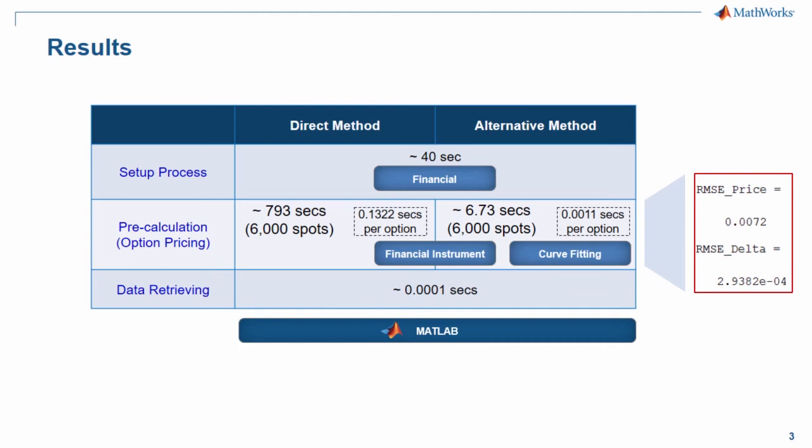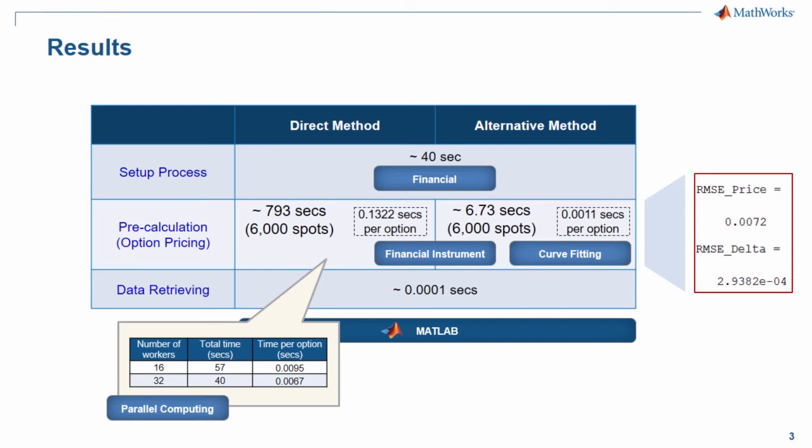Imagine if you need to handle many exotic options or structured products in a real-time trading environment, you might prefer this alternative method because the direct method might be too slow for you. But if you want to compute option prices and deltas directly, you can also do it by using parallel computing toolbox to speed up the computation. In this case, MATLAB can finish the calculation in less than 1 minute using 16 workers or more.